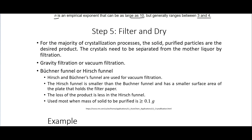Step five is to filter and dry. For the majority of crystallization processes the solid purified particles are the desired product. The crystals need to be separated from what is called the mother liquor by filtration — either gravity filtration or vacuum filtration. For vacuum filtration you might use a Buchner funnel or a Hirsch funnel. The Hirsch funnel is smaller with a smaller surface area, so loss of product is less but it takes longer. This is used most when the mass of solid to be purified is greater than 0.1 grams.